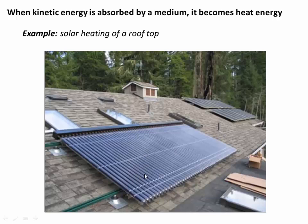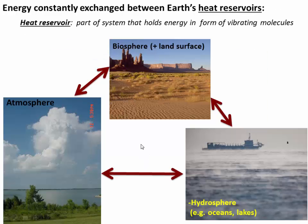When we think about the earth system we have to think about how energy moves between three different heat reservoirs: the biosphere and the land surface, the atmosphere, and the hydrosphere — basically oceans and lakes. Each of these stores a lot of heat energy, but they're also constantly transferring energy back and forth as kinetic energy.